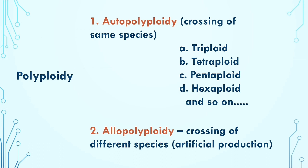Polyploidy can be of two types: one is autopolyploidy and another is allopolyploidy. Autopolyploidy takes place between the same kind of species, and allopolyploidy takes place in different species. Autopolyploidy is a natural phenomenon where there is crossing between the same species and various sets of chromosomes are produced in the offspring generation.